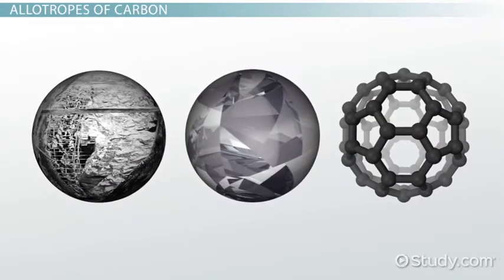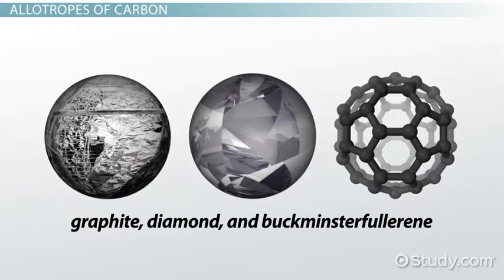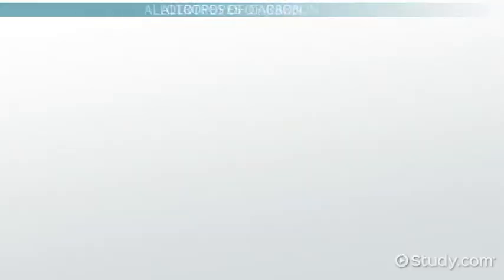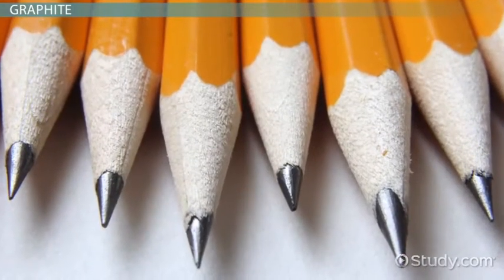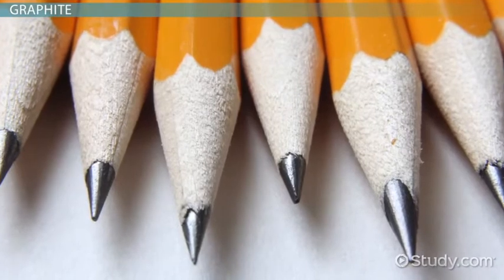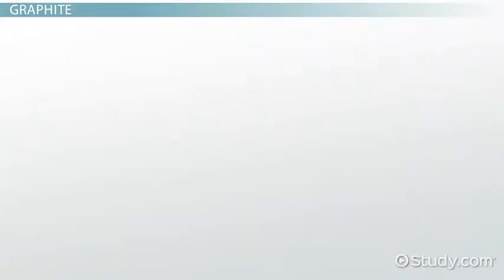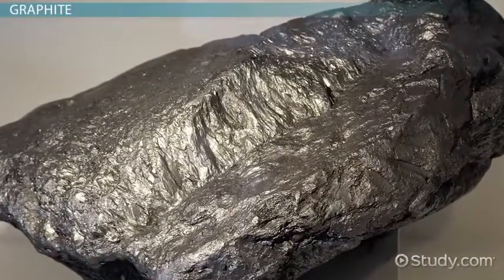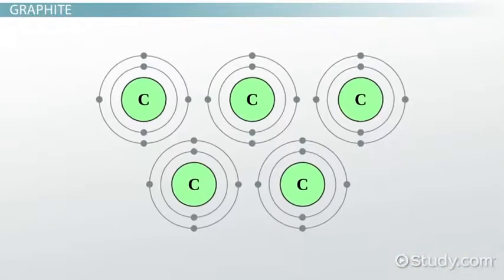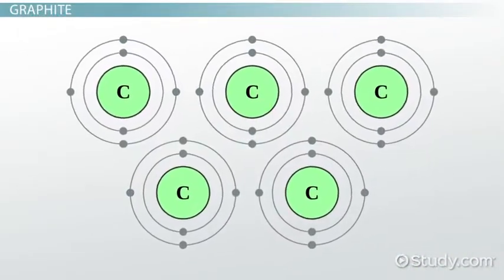Three main allotropes of carbon are graphite, diamond, and Buckminster Fullerene. Graphite is most commonly referred to as pencil lead, although it has nothing to do with lead at all. In fact, graphite is made entirely of carbon. How those carbon atoms are arranged is what gives graphite its properties.